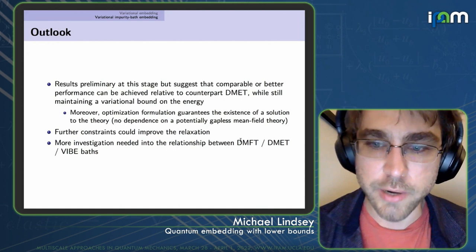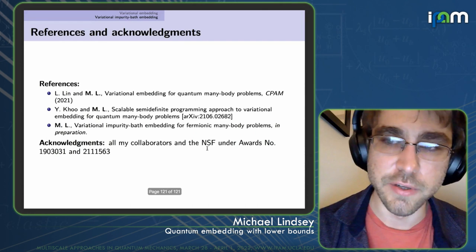The outlook for this part: with the caveat that these are preliminary results, it's quite interesting that impurity problems arise from something that still offers a guaranteed lower bound. The optimization formulation guarantees the existence of a solution to the theory with no dependence on a gapless mean-field theory as in DMET, making it interesting to explore comparison settings where that poses a problem. There's also the possibility of further constraining this relaxation, and it would be valuable to continue examining the relationship between the baths here and those in DMET and DMFT.